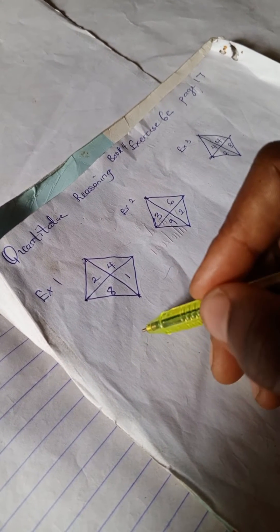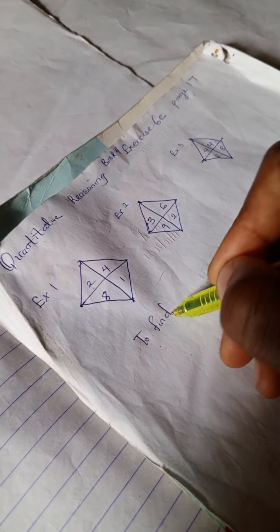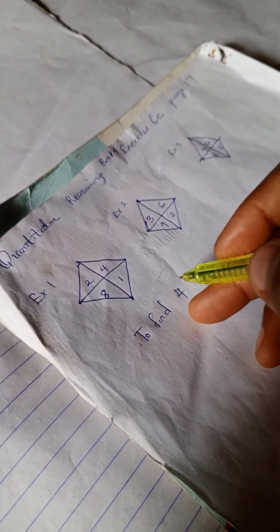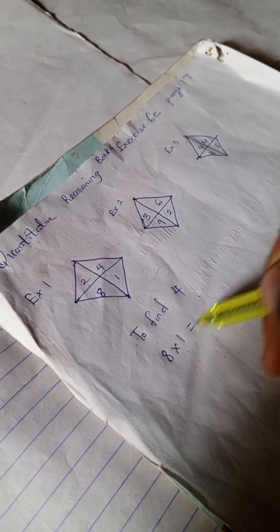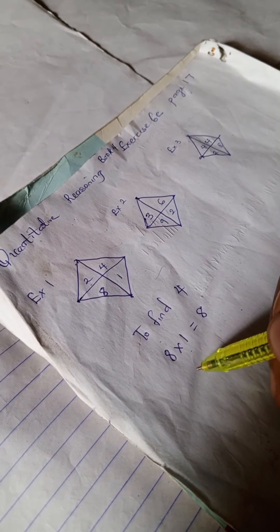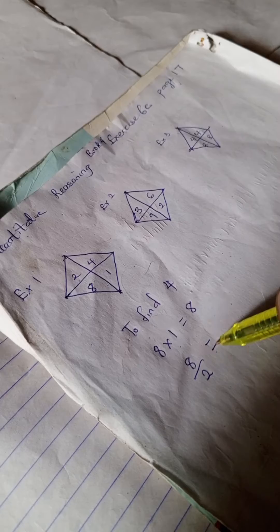first example, let's try to find 4. So to find 4, since we know that they are equivalent, we have 8 times 1 is 8, and 8 divided by 2 you